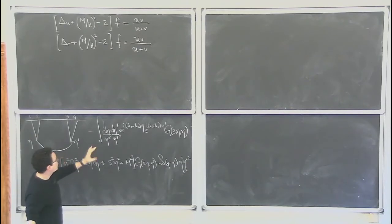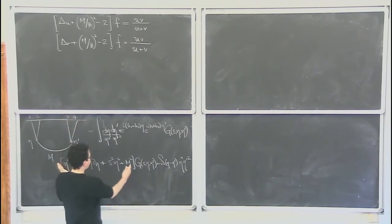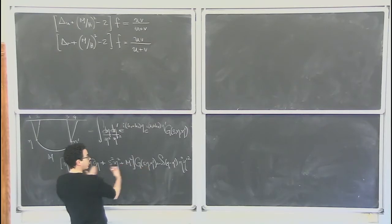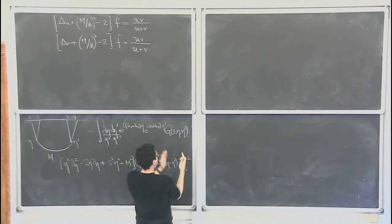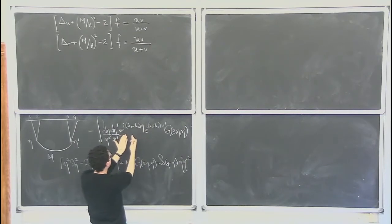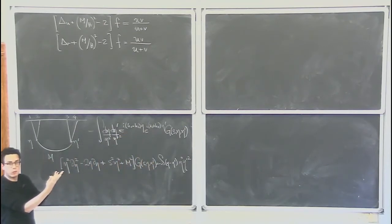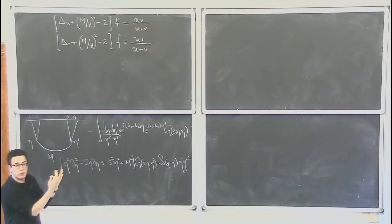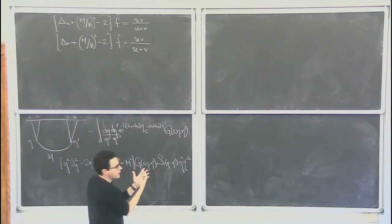If you apply the Klein-Gordon operator to the propagator, the propagator collapses and you get a delta function. The whole point is that if I start from the Klein-Gordon equation for the propagator and I get a delta function, then this becomes very much like the contact four-point lambda phi-to-the-four interaction that we computed yesterday.